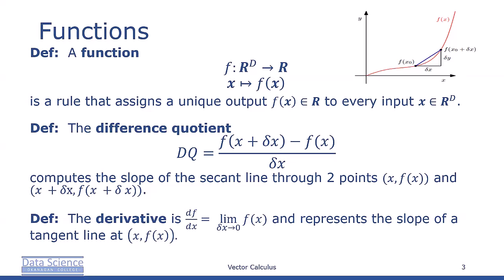Now a definition. The difference quotient, DQ, is equal to [f(x + δx) - f(x)] / δx. And this computes the slope of a secant line through two points (x, f(x)) and (x + δx, f(x + δx)).